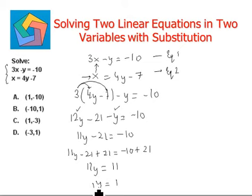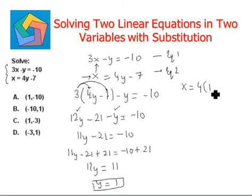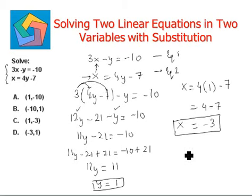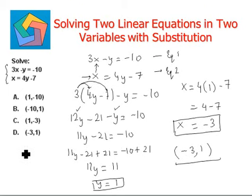We will use the value y equals 1 in the second equation to find out the value of x. So x equals 4 times 1 minus 7. 4 times 1 is 4, minus 7, so x equals negative 3. We have the value of x as negative 3 and y as 1. Our final answer can be written as negative 3 comma 1. This is the final answer and can be seen in option D.